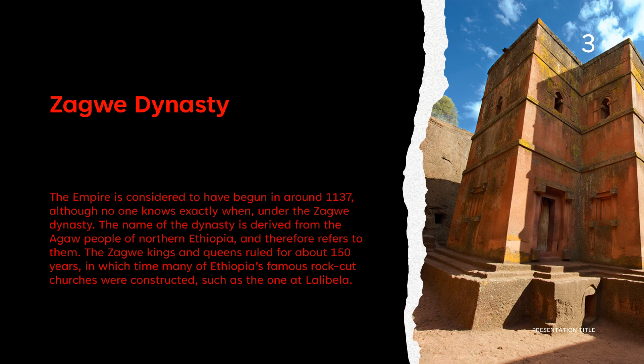The first dynasty we're going to talk about is the Zagwe dynasty. This empire is considered to have begun around 1137, although no one knows exactly when, under the Zagwe dynasty. The name of the dynasty is derived from the Agaw people in northern Ethiopia. The Zagwe kings and queens ruled for about 150 years, during which time many of Ethiopia's famous rock-cut churches were constructed, such as the one at Lalibela, shown in the picture on the right. During this time they constructed well over 1,600 churches throughout Ethiopia.